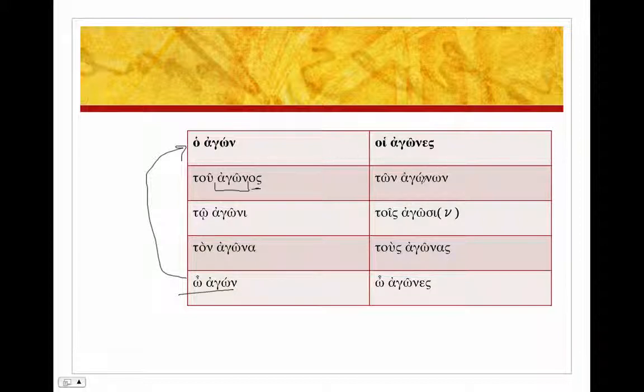Hoi agones, ton agonon - the accent there has to be acute because this is long. And then our dative plural, which is always the problem: tois agosin. The nu has been eaten up by the ending si, but that's the only strange thing in nouns of this sort.